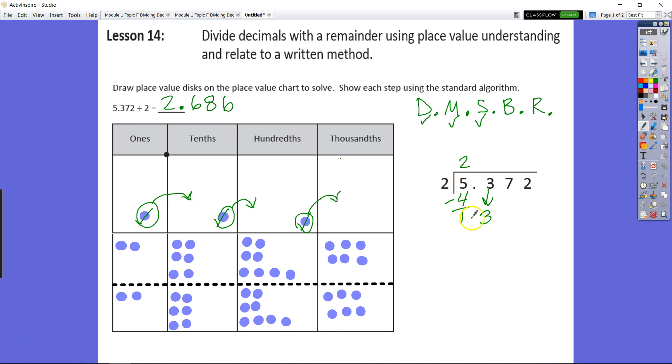We regrouped one one as ten tenths to give us thirteen tenths. How many times does two go into thirteen without going over? Skip counting: two, four, six, eight, ten, twelve—that's six. Don't forget your decimal; it lines up. Six times two is twelve. Subtract to get one, then bring down and repeat.